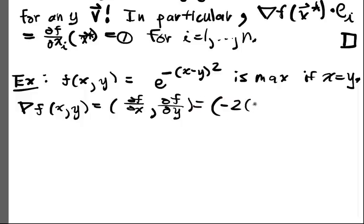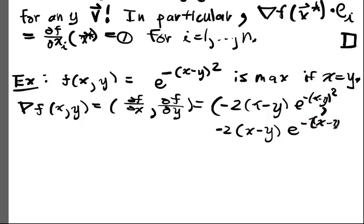That's going to be -2(x-y)e^(-(x-y)^2). And the second component is going to be 2(x-y)e^(-(x-y)^2). And this is equal to zero. It's clear that this is equal to zero if x equals y.